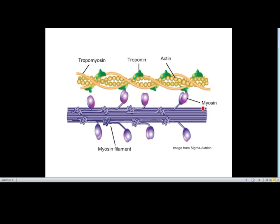Myosin has cross arms — that is heavy myosin and light myosin. Troponin and tropomyosin are regulatory proteins that help in masking and unmasking the binding site.